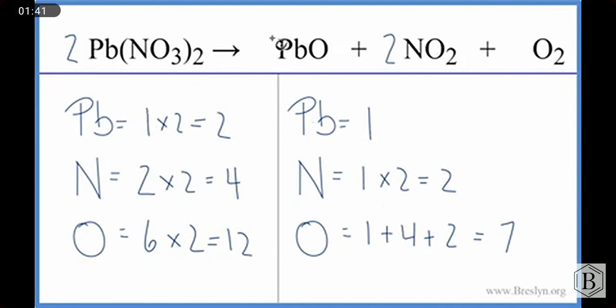Let's fix the lead first because we could just put a two here. One times two. That gives us two there. And that will change the oxygens. But I also want to get the nitrogens correct, and I need to have four nitrogens.